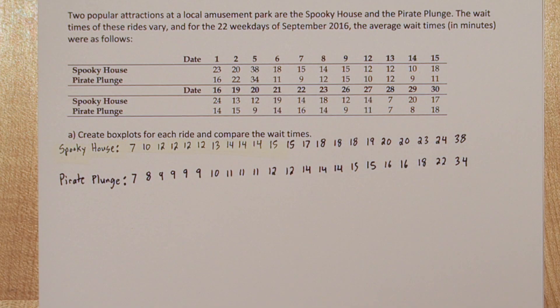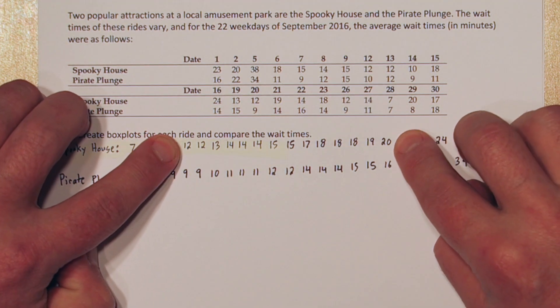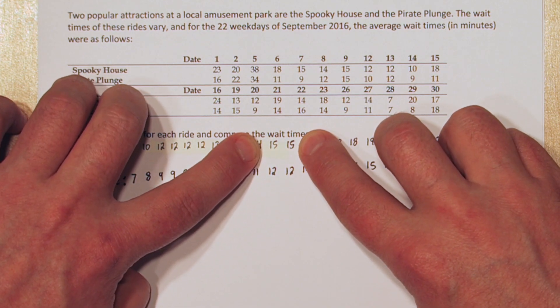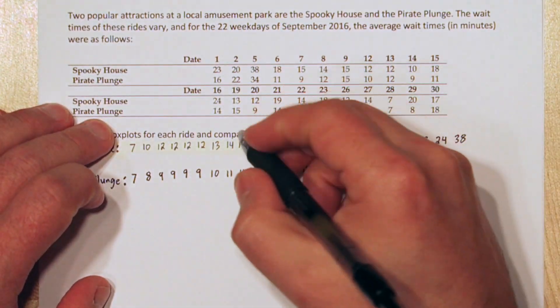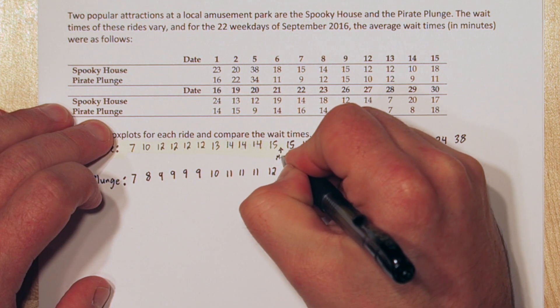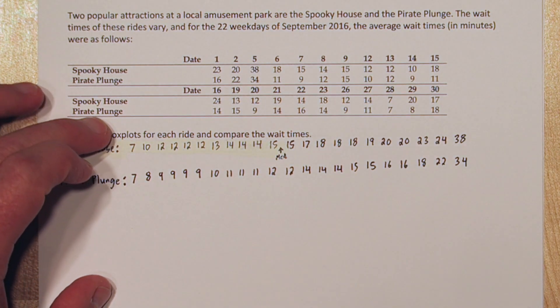Now it's time to find the five number summary. Let's start with spooky house. We need to find the median, so let's count in from the edges to the very middle number. The middle number is between these two 15s. So the average of two 15s is another 15. So here's the median.